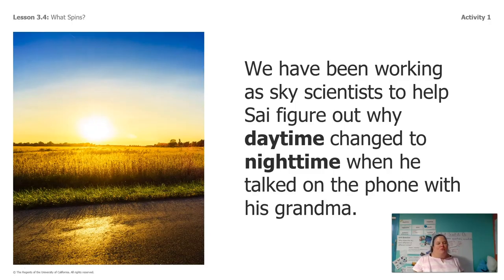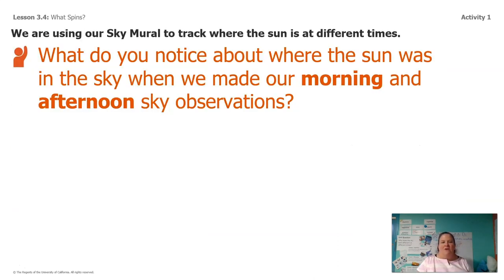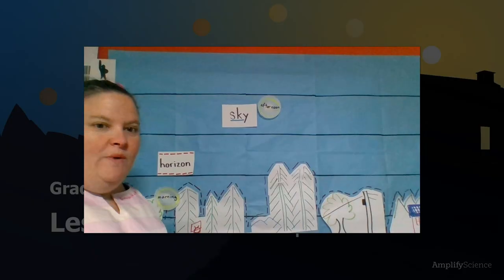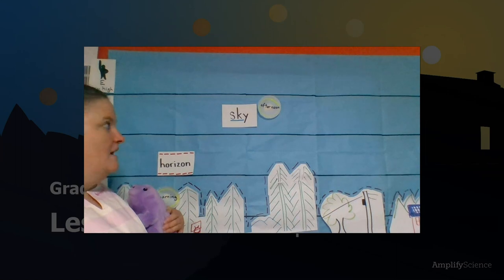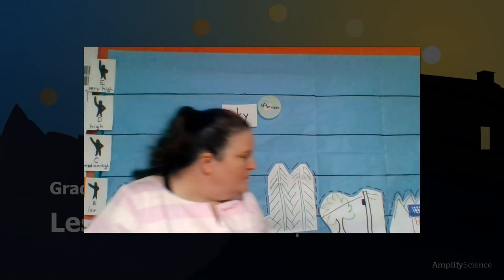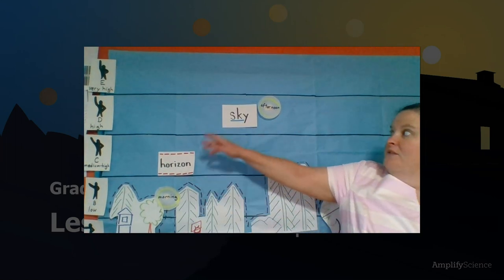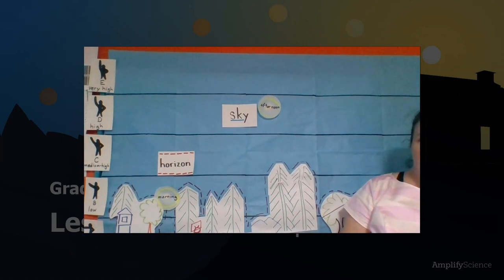So far for this chapter, we've been working as sky scientists to help our buddy Si figure out why daytime changed to nighttime while he talked on the phone with his grandma. Let's look at our sky mural and see what we notice about where the sun was when we made our morning observations and where it was when we made our afternoon observations. What do you guys notice?